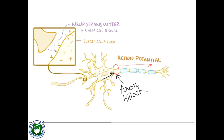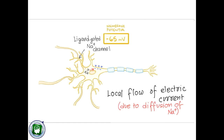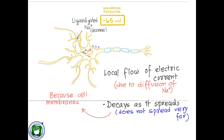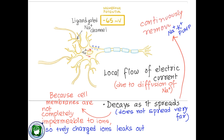Due to entry of positively charged sodium through open sodium channels at one location, these charged ions are attracted to adjacent areas on the inside of the membrane that are more negative, and thus there is a rapid flow of electric current away from the site of the open sodium channels. However, this local flow of electric current decays as it spreads and does not spread very far, because the cell membranes are not completely impermeable to ions. Also, the active sodium-potassium ATPase pump continuously removes sodium from inside, so the sodium that entered cannot travel much further.